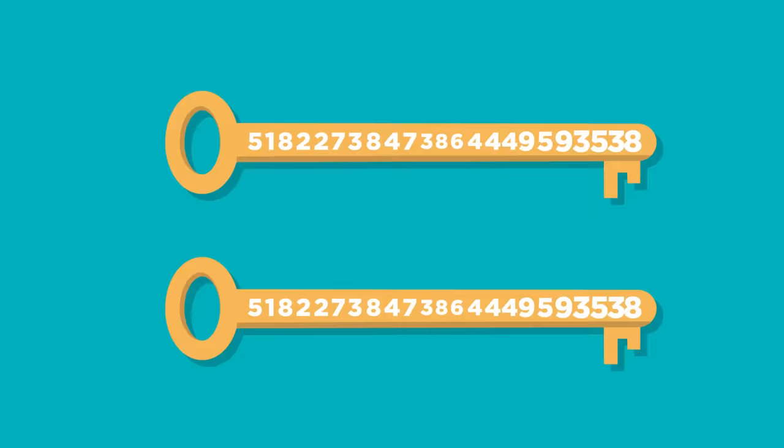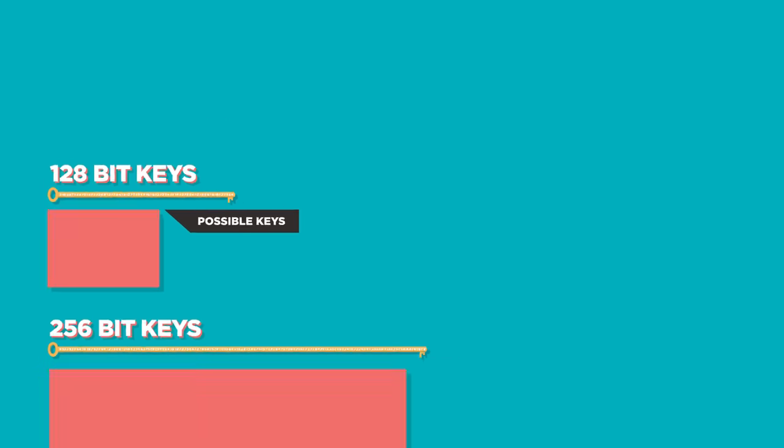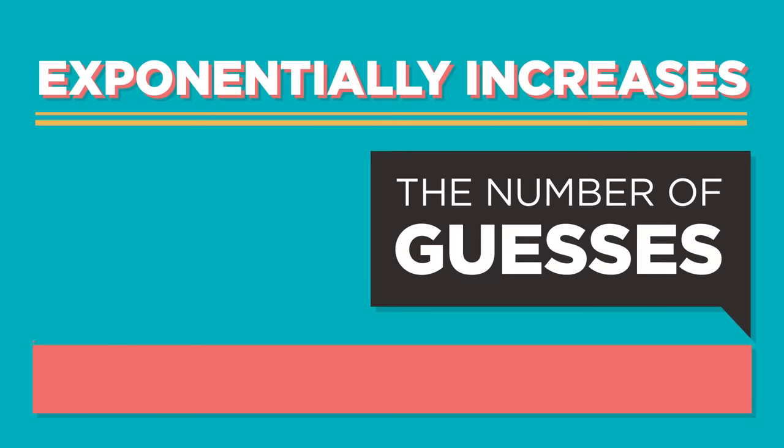Of course, computer chips get twice as fast and half the size every year or so. If that pace of exponential progress continues, today's impossible problems will be solvable just a few hundred years in the future, and 256 bits won't be enough to be safe. In fact, we've already had to increase the standard key length to keep up with the speed of computers. The good news is, using a longer key doesn't make encrypting messages much harder, but it exponentially increases the number of guesses it would take to crack a cipher.